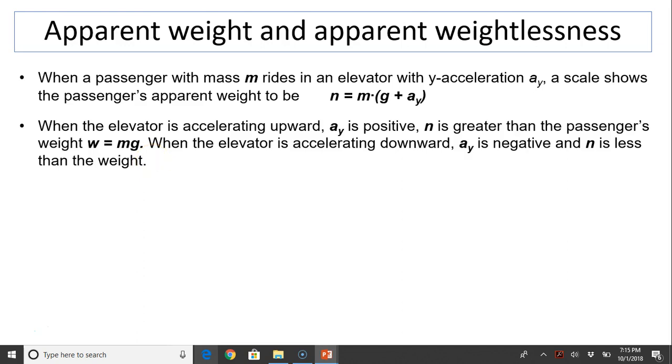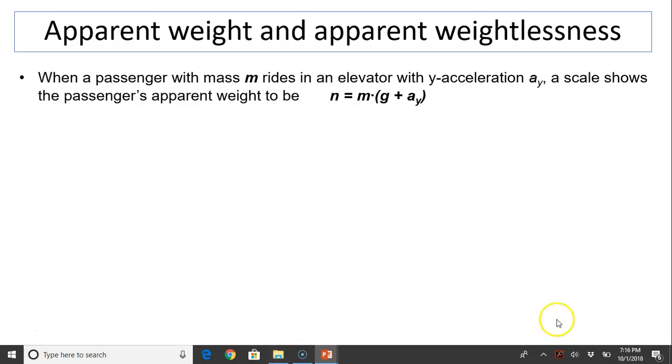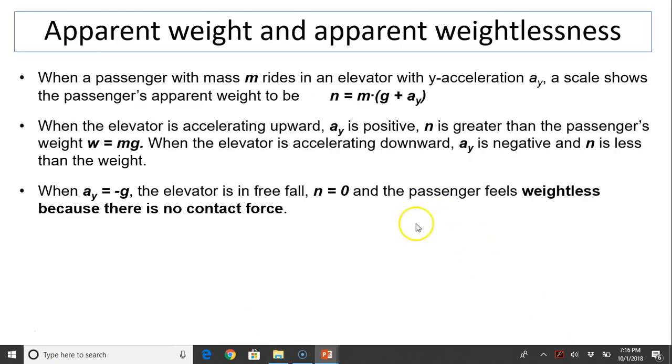You might have gone on a ride in an amusement park, sometimes you feel heavier, sometimes you feel lighter. This is why. Because n, what you feel is n. You can't feel your weight, you feel your weight through the normal force. So when you are free-falling, when Ay equals negative g, the elevator is in free fall, n equals zero. You don't feel anything. That's when you feel weightlessness, because there is no contact. You can only feel through contact force.